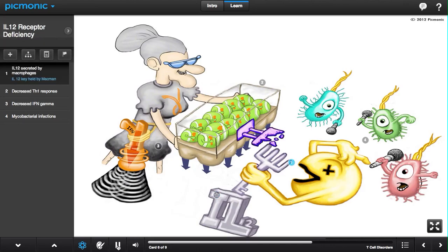In a normal immune response, IL-12 is secreted by macrophages, demonstrated by the Mac-Man with the ligand shown by the key for the IL-12 receptor.